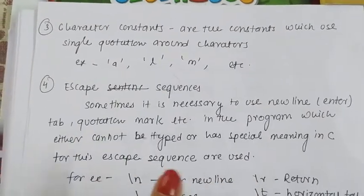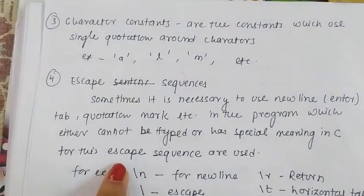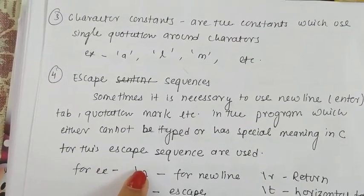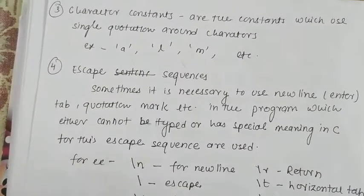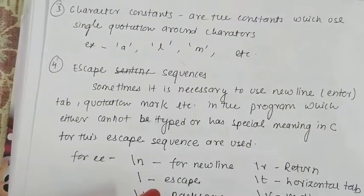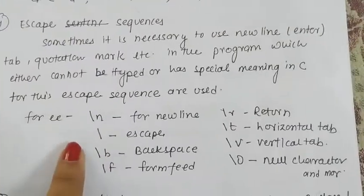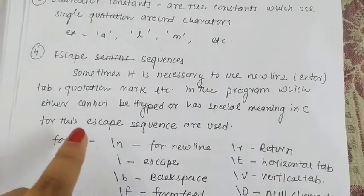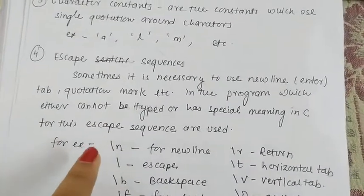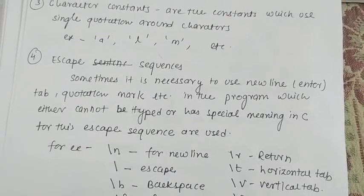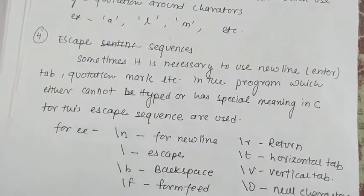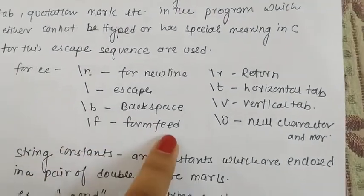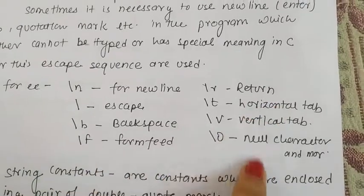Then escape sequences - we cannot type some things directly, so we use escape sequences like slash n for newline, slash b for backspace, slash f for form feed, slash r for return. We have many escape sequences which we have learned. After that, you have the fifth type - string constants.